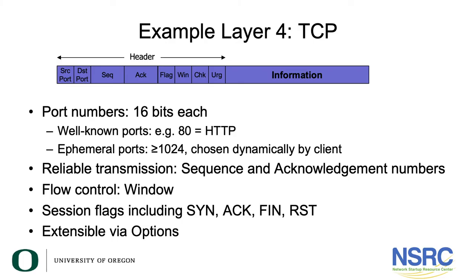A more sophisticated layer four protocol is TCP, the Transmission Control Protocol. It also has source and destination port numbers — the same 16 bits. For example, well-known port 80 on TCP is for HTTP. But TCP adds a bunch of other fields, so the header is much bigger, and it adds features like reliable transmission. It has sequence numbers and acknowledgement numbers in packets that allow it to keep track of how packets relate to each other in a stream, ensuring they are assembled in the right order and enabling retransmission of lost packets.